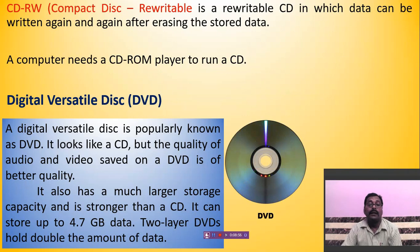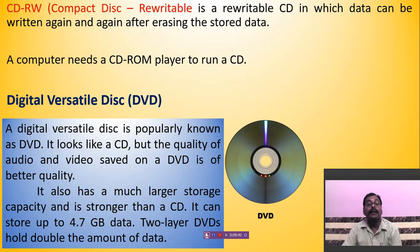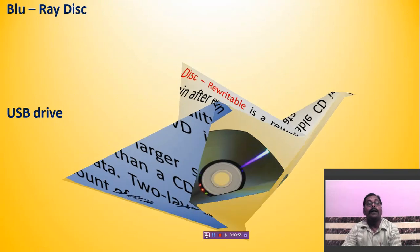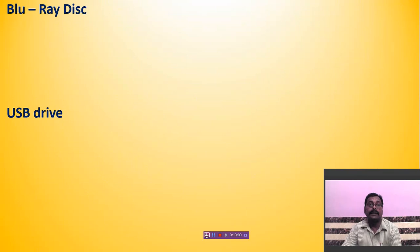In the market, two-layer DVDs are also available. On a CD you can save data on only one side — the shining side — while on the other side a label is fixed, so you can record on only one side. But two-layer DVDs allow you to record on both sides of the DVD, meaning they can hold double the amount of data.